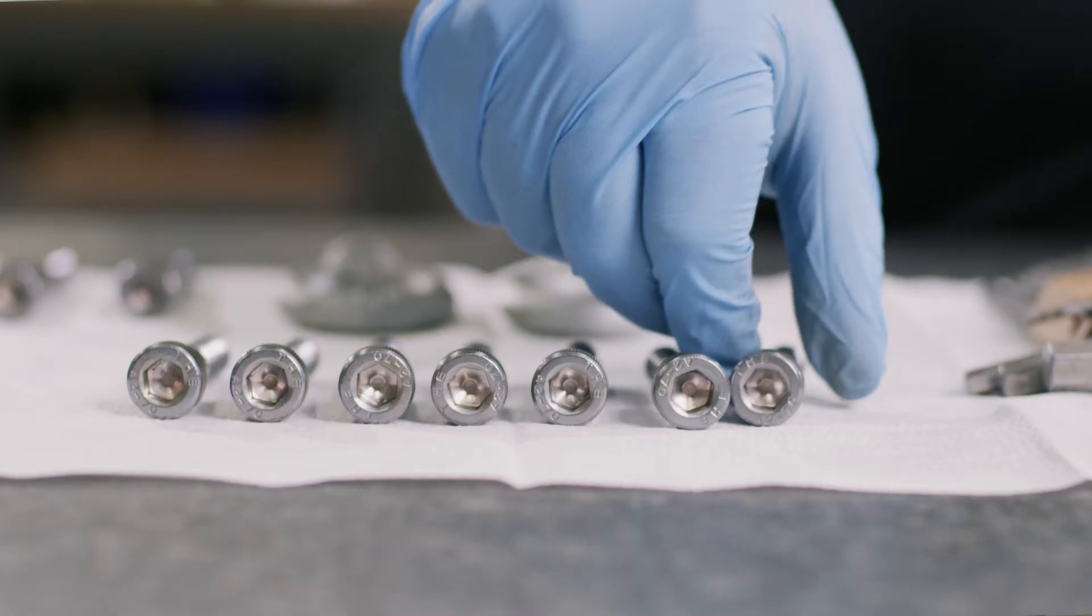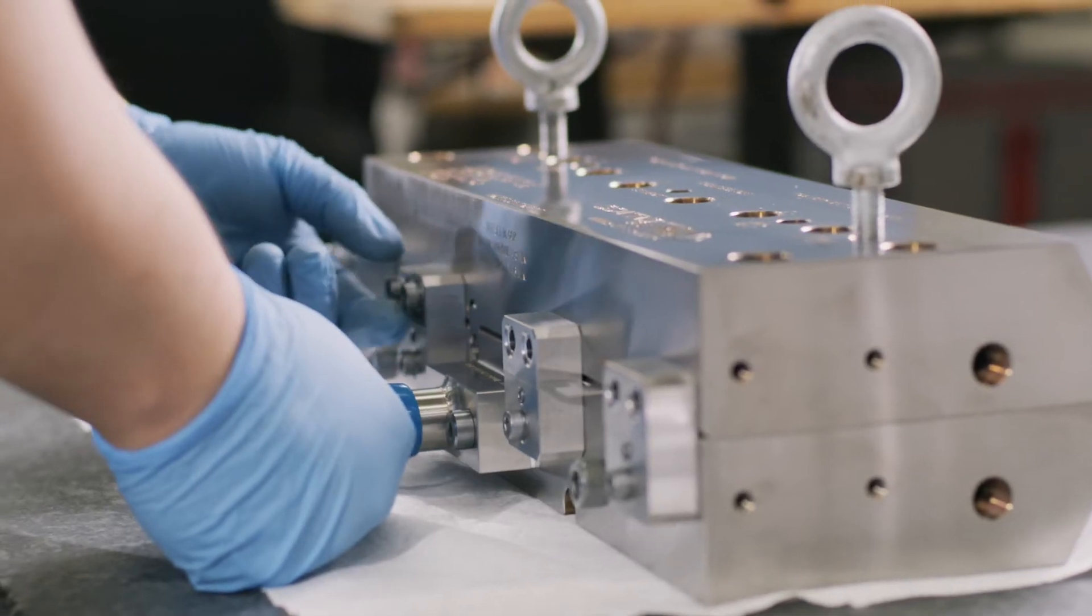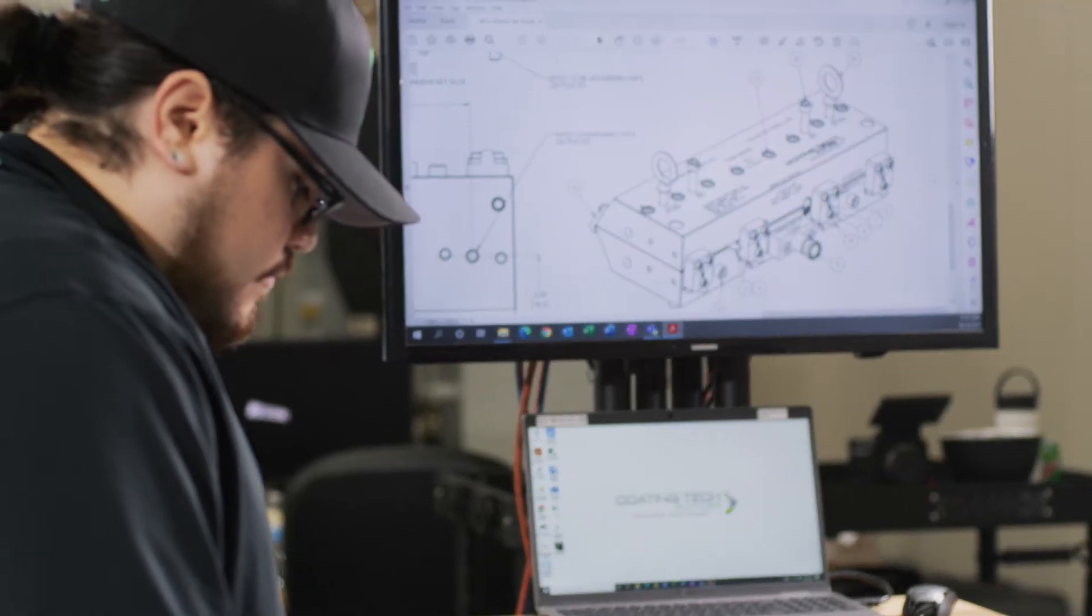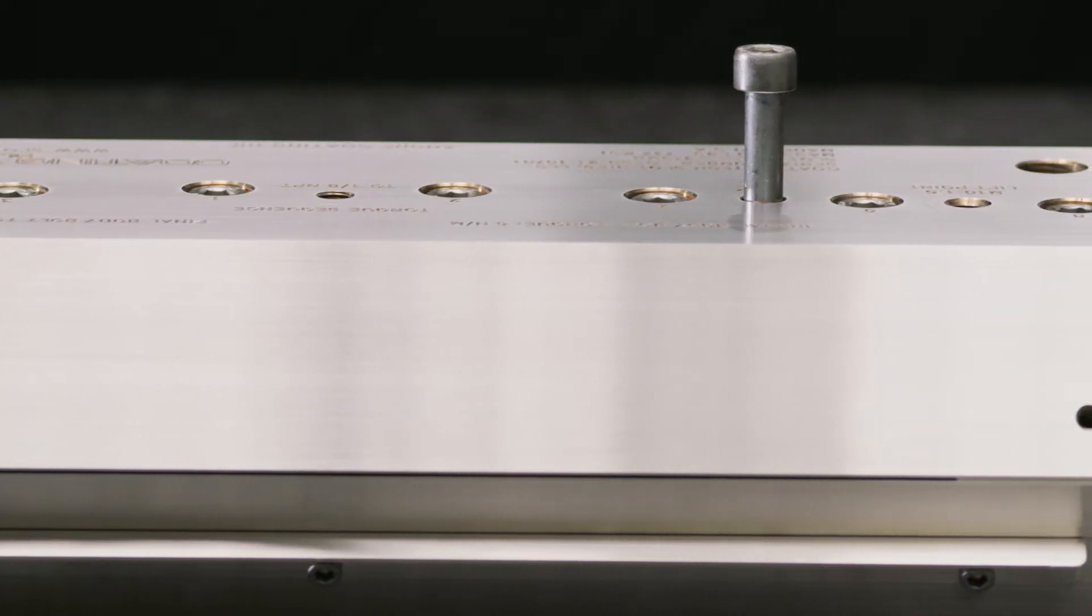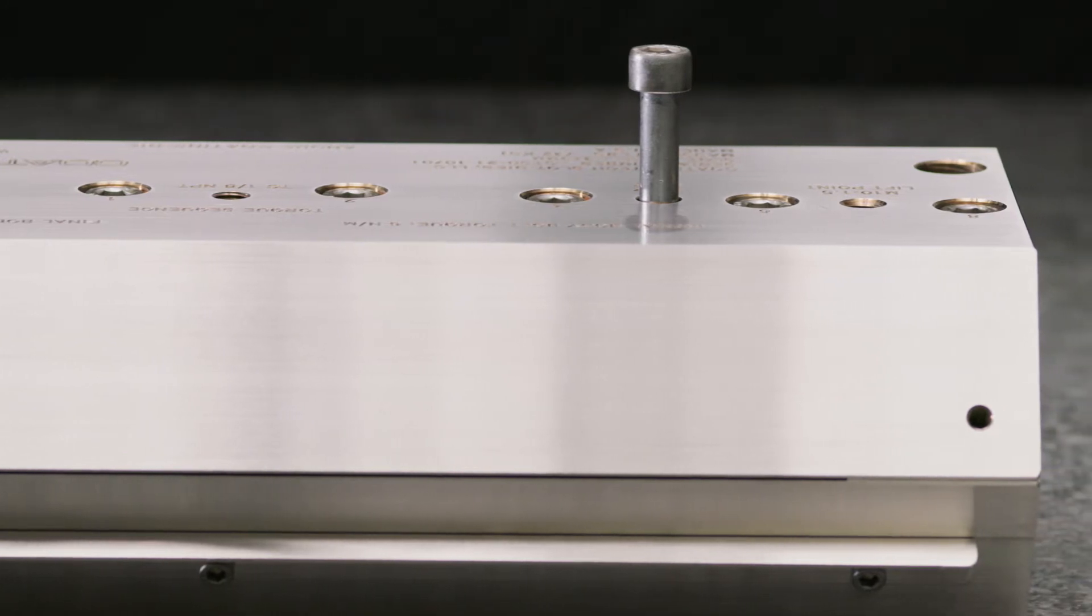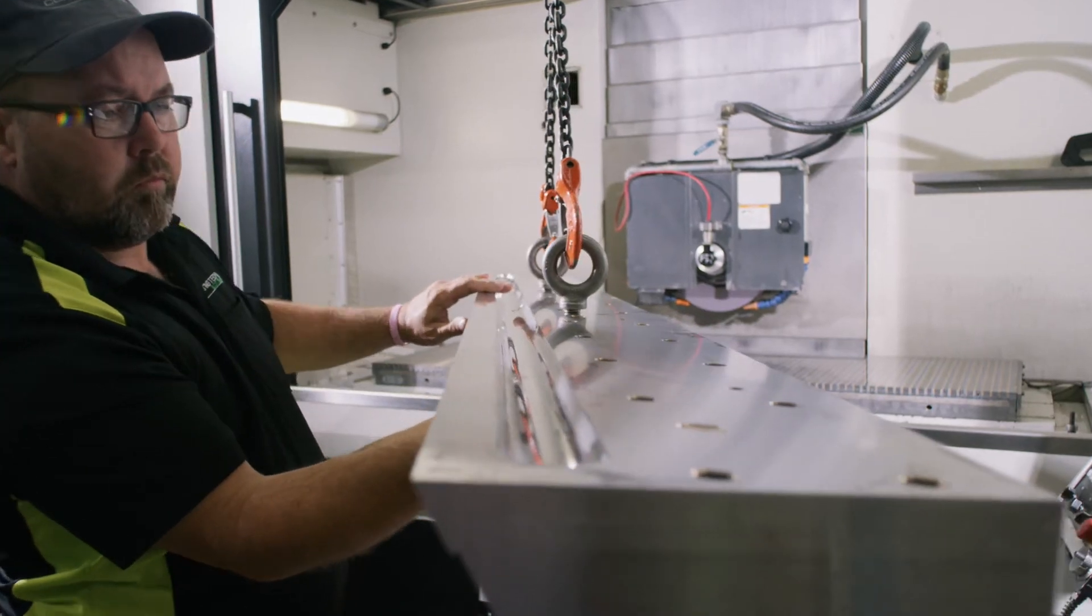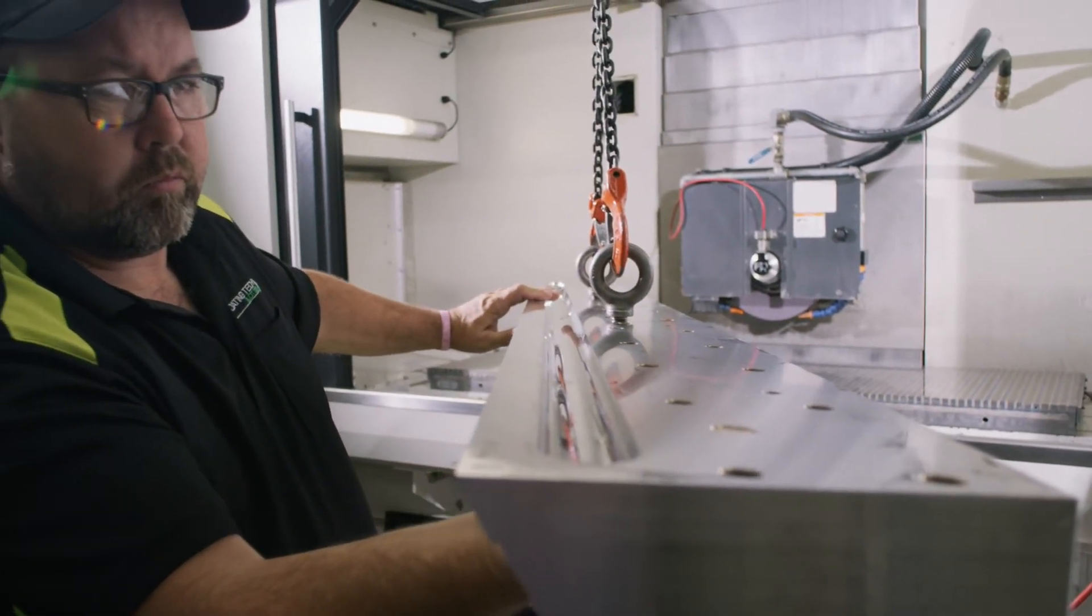A slot die is two pieces of metal bolted together to control fluid flow to the most precise level you need. So anything where you're putting a liquid onto a substrate can be coated with slot die, but the areas where slot die has the biggest impact is where the cleanliness, quality, and precision is the most important.